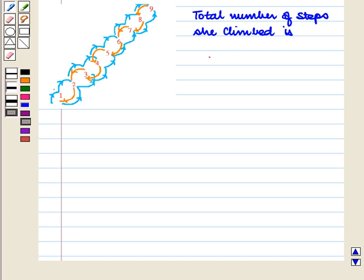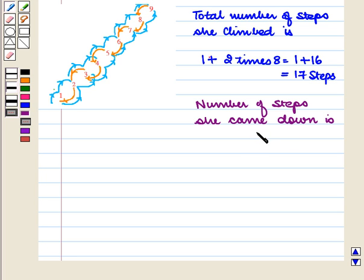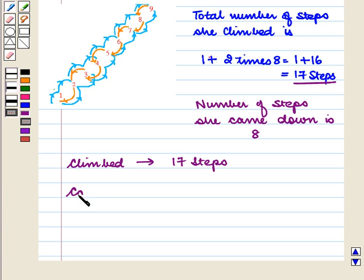So total number of steps she climbed is one plus two times eight, which is equal to one plus sixteen, which is equal to seventeen steps. Also, step nine is the last step, so she cannot come down from step nine. She came down to every step from one to eight except at step nine. So number of steps she came down is eight. She climbed seventeen steps and came down eight steps.